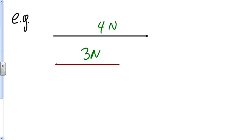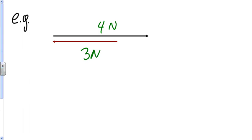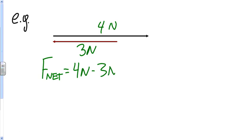Here I have two force vectors. I have a vector with a magnitude of 4 newtons going to the right, and a vector with a magnitude of 3 newtons going to the left. If I'm pulling with a force of 4 newtons to the right and 3 newtons to the left, what is the magnitude of the net force? I'll use the method of linear resolution and put them side by side. I notice that I have a 4 going in one direction and a 3 going in the opposite direction. Therefore, my net force equals 4 newtons minus 3 newtons, which equals 1 newton to the right.